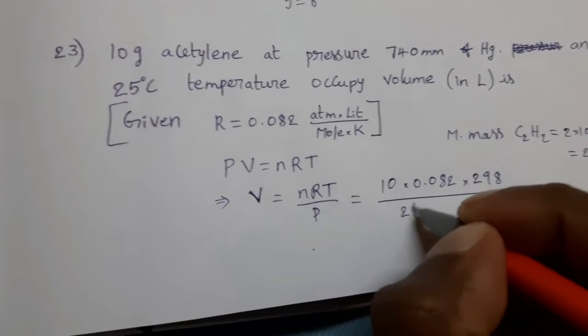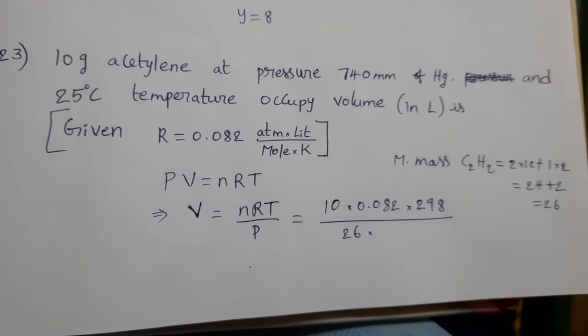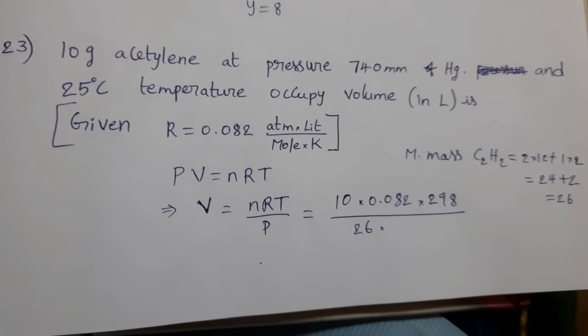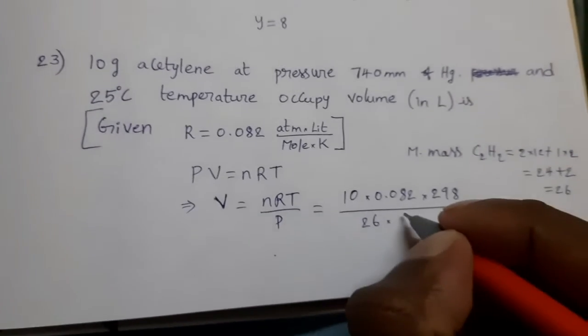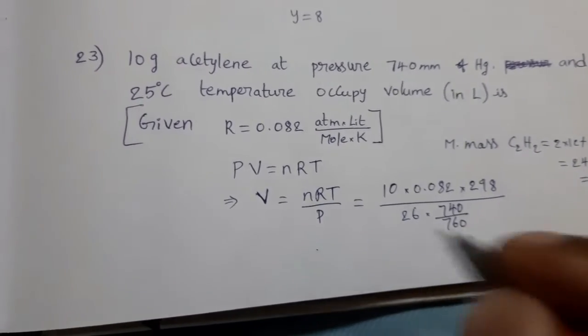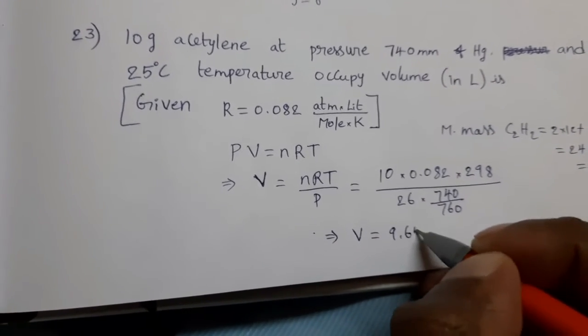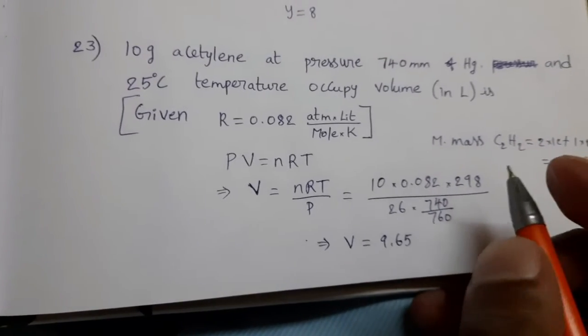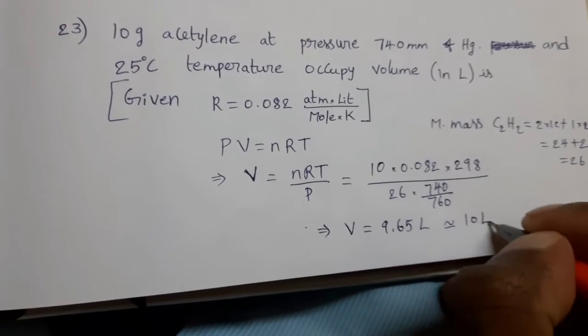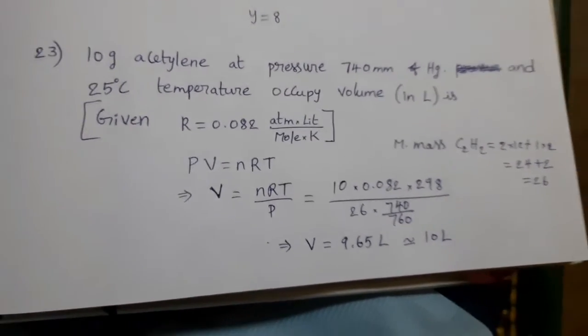So, 26 into pressure. In the question, they give 740 mm of Hg. Convert that into atmosphere. Then, we have to divide this value with 760. 740 divided by 760. Then, final volume is, after doing calculation, we can get 9.65 liters. So, approximate value 10 liters. What is the answer? 10 liters is the answer.